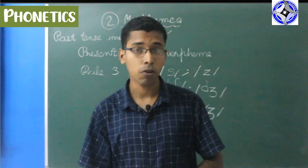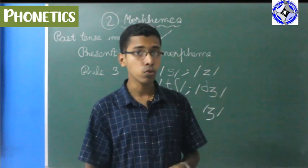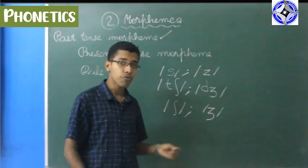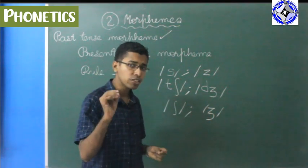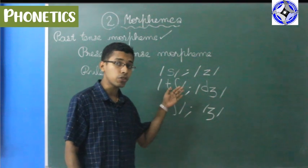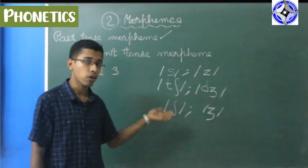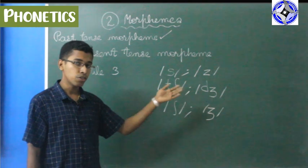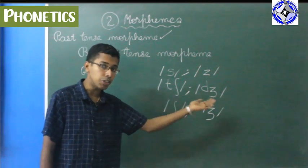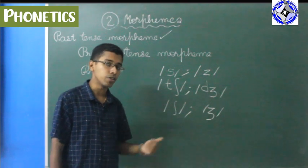I think rule number one and rule number two are clear to all of you. If you have any doubt, you should ask me. Now we have rule number three. Rule number three has a slight — in fact a great — difference from the previous rules. I want you to pay attention to these six phonemes: /s/, /z/, /tʃ/, /dʒ/, /ʃ/, /ʒ/.